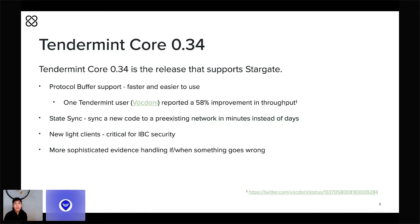Tendermint Core 0.34 isn't just a big encoding change — it also introduces a pair of important and highly anticipated features. One is what we're calling State Sync. State Sync lets new nodes join pre-existing networks by replaying application state rather than replaying all of the blocks in the blockchain. Without State Sync, it can take a new node days to catch up on a pre-existing network, but with State Sync it only takes a few minutes. That's a huge improvement.